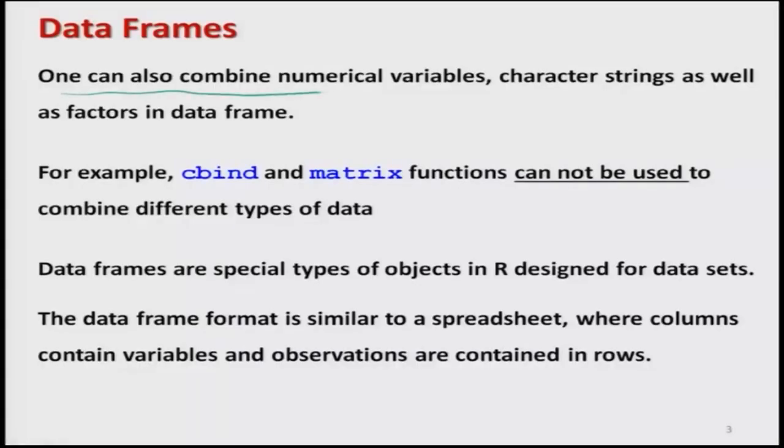The second advantage is that in a data frame, one can combine numerical values, character strings, as well as factors. So different types of variables can be combined together. For example, in a spreadsheet the first column might be names — strings like Mr. X, Mrs. Y — then height, weight, and age as numbers, and a fourth column for gender as male or female, which is a factor. All these things are possible in a data frame.